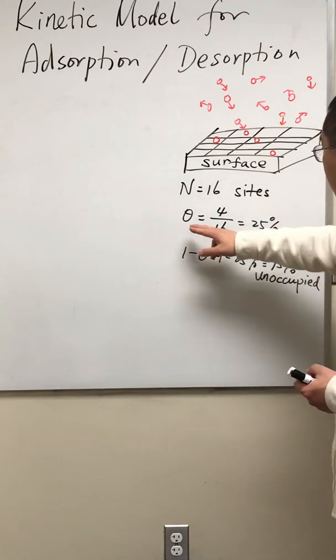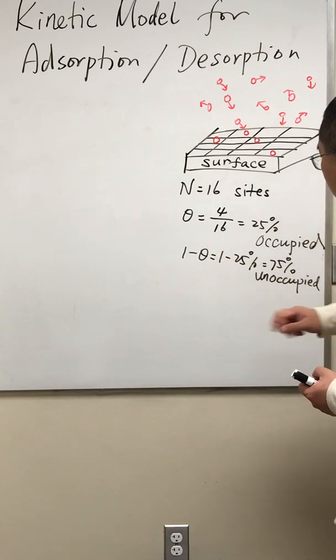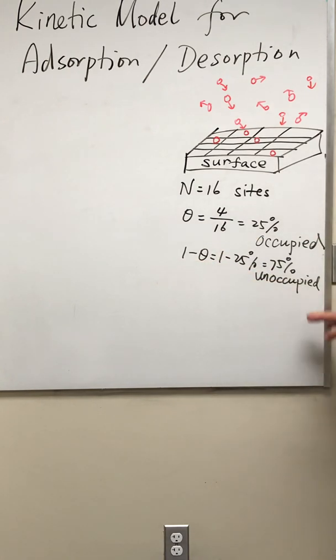Theta is simply the percentage of the occupied sites. One minus theta is the percentage of the unoccupied sites.